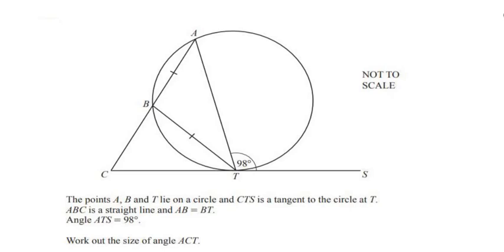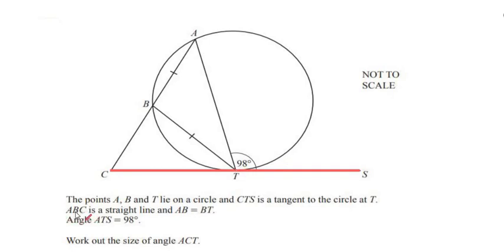Hello and welcome back to my channel. In this video we are going to solve an example on circle theorems. The question is: the points A, B and T lie on a circle, and CTS is a tangent to the circle at T. Tangent means it just touches the circle at one single point, so the tangent CTS is touching the circle at the point T.